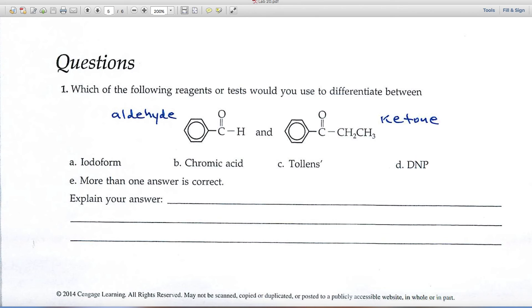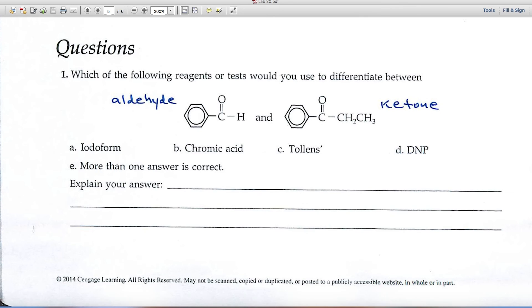On the left-hand side, I see an aldehyde functional group. Over on the right-hand side, that C double bond O is in the middle of the structure, and so it's a ketone.